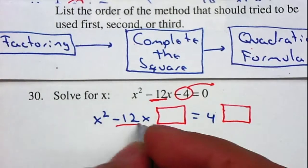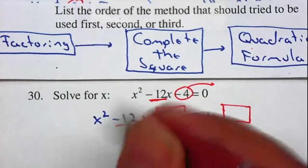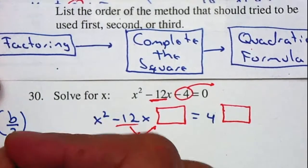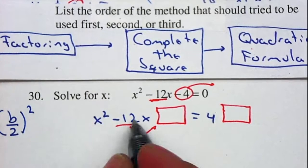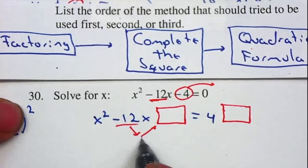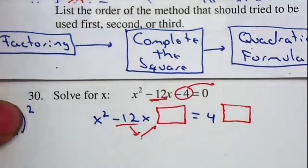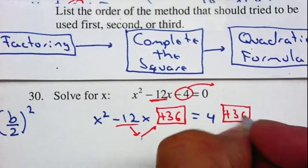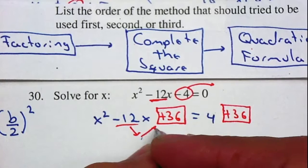To complete the square, I take half of b and then square it. The formula is b divided by 2, then squared. So negative 12 divided by 2 gives me 6, and 6² is 36, plus 36. Whenever you place it here and here, it's always positive because you're squaring it.